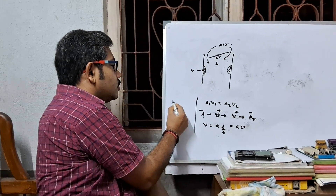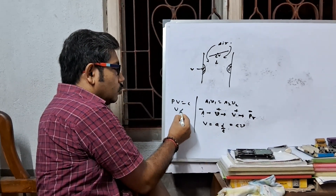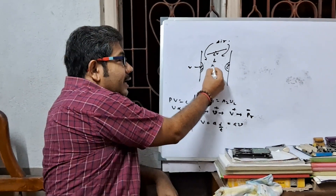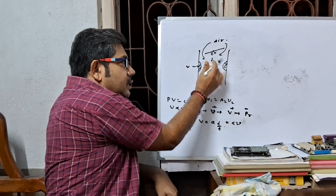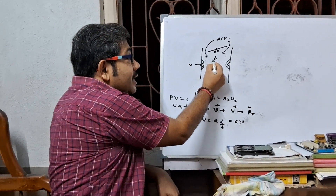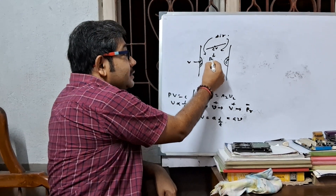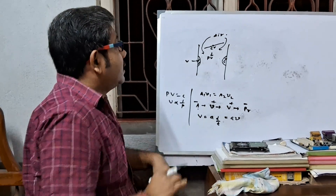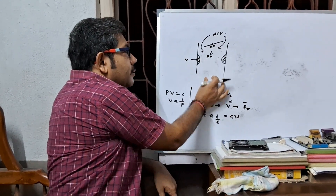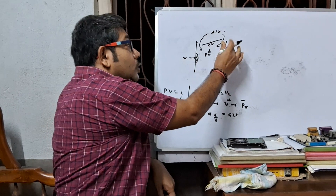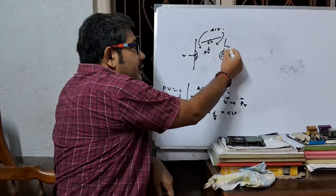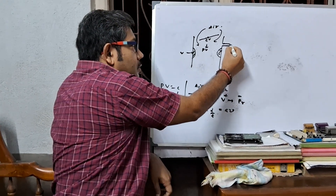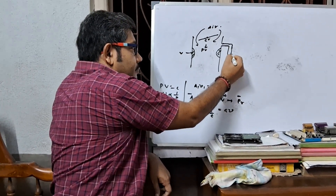If volume increases, then pressure will decrease, because of Boyle's Law: PV = constant, so volume is proportional to 1/pressure. This pressure drop means that when air passes through this venturi, a partial vacuum is created here.